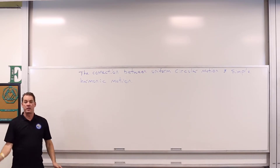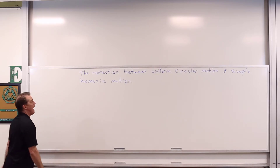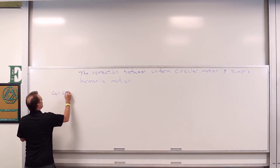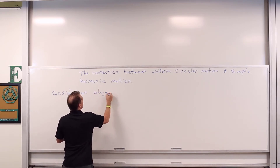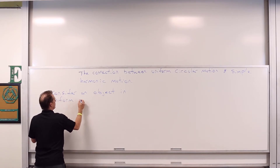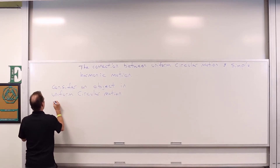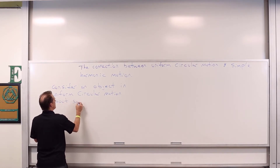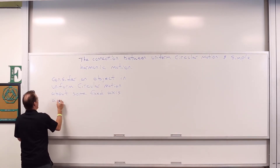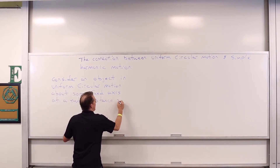First we're going to consider an object that is exhibiting uniform circular motion. It circles around some axis of rotation at some radial distance R, and just does that. So let's consider an object in uniform circular motion about some fixed axis at a radial distance R.